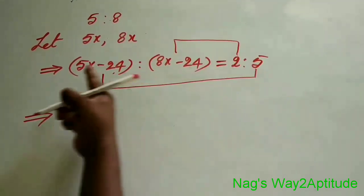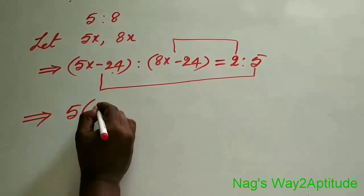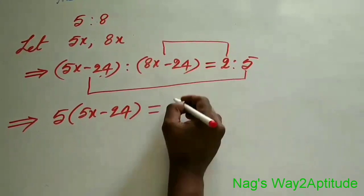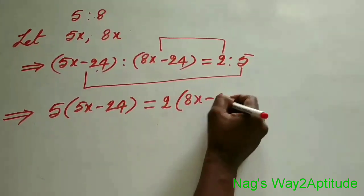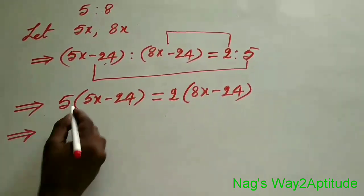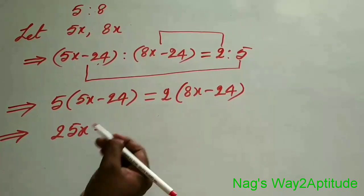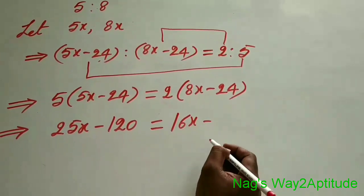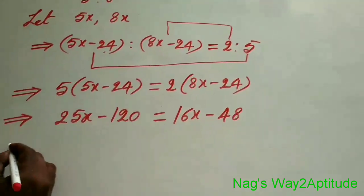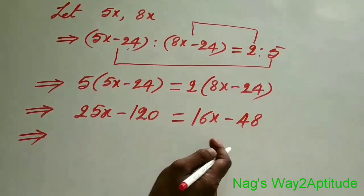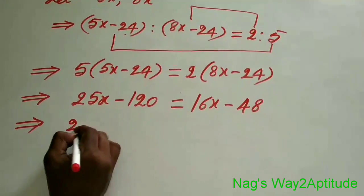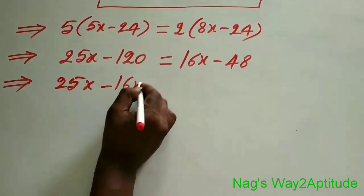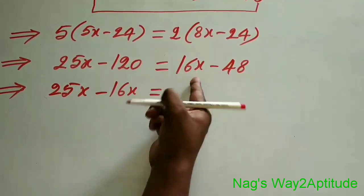Therefore, you multiply the extremes: 5 into 5x minus 24 equals the product of means, 2 into 8x minus 24. Expanding: 25x minus 120 equals 16x minus 48. Bringing similar terms to one side, this 16x will become minus 16x.